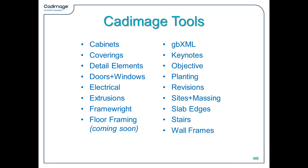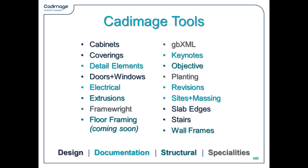In terms of the tools, this is a list of the current toolset. Floor Framing, which you'll see at the bottom left, is coming soon — it's just in the final phase of testing ready for release. If I classify them into different category types: there are design-based tools such as cabinets, coverings, documentation, electrical, detail elements, structural — things like Objective, Floor Framing, Wall Frames — and then there are the specialities as well.